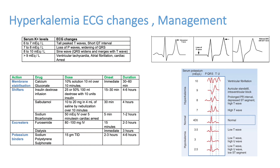Salbutamol nebulization 10 to 20 mg in 4 ml saline can be given but is a high dose and may cause tremors and palpitations, so it can be avoided if other measures work. Sodium bicarbonate should only be given in hyperkalemia-induced cardiac arrest, not routinely. Furosemide can be given if kidneys are functioning to remove potassium via urine. In renal failure with no urine output, dialysis may be required. Sodium polystyrene sulfonate, a potassium binder, can be given orally, and a low-potassium diet should be advised.